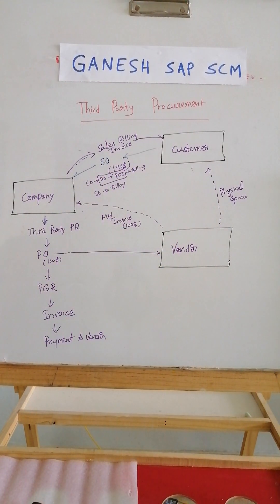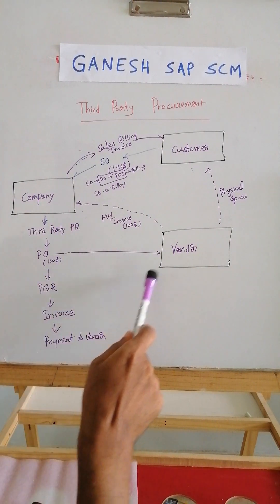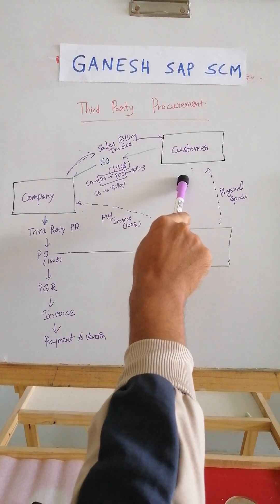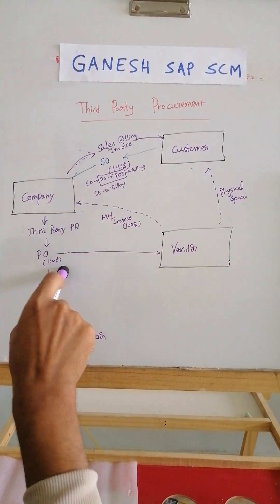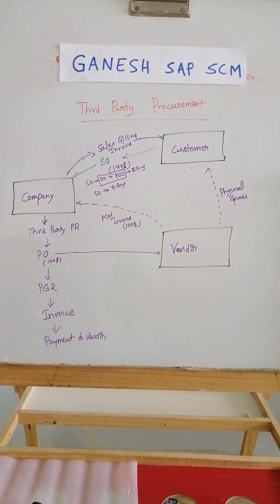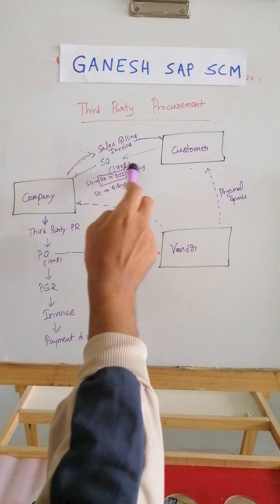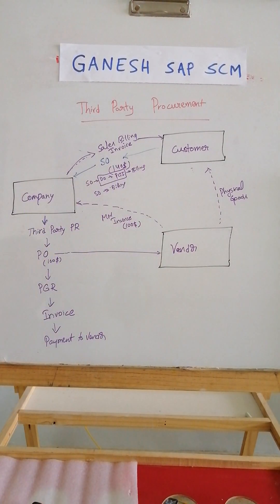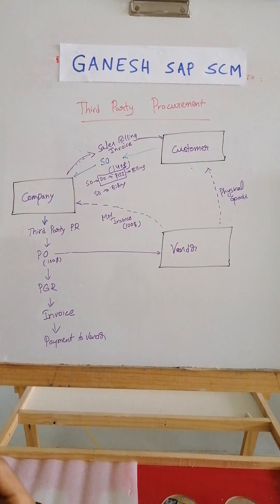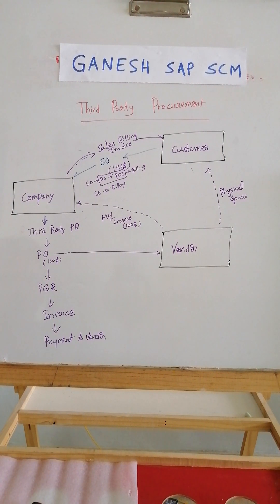The key concept to understand is how third-party procurement happens: a company buys material from the vendor and asks the vendor to send it directly to the customer. Technically, there are specific item categories and account assignment categories used in SAP — those are covered in separate SAP technical videos.